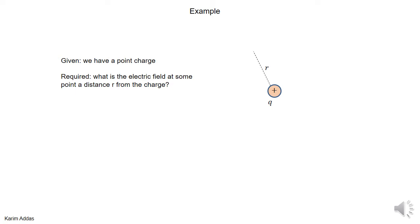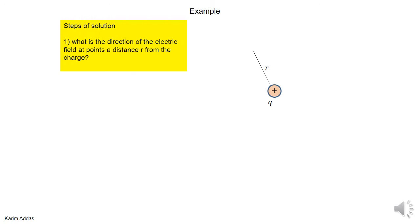We're going to use Gauss's law. So the steps of the solution, the first step, we need to know what direction the electric field would be at any point around the charge. So we know that at a point charge, the electric field lines go radially outward from the charge. So always the electric field lines going radially outward.